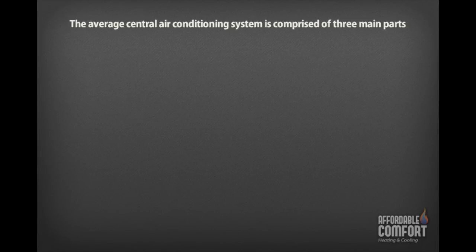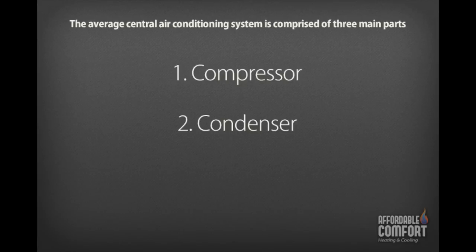The average central air conditioning system is comprised of three main parts. The compressor, which is located on the outside air portion of the air conditioner, and is responsible for converting the gas. The condenser, also located in the same area, which is responsible for condensing the vapor.